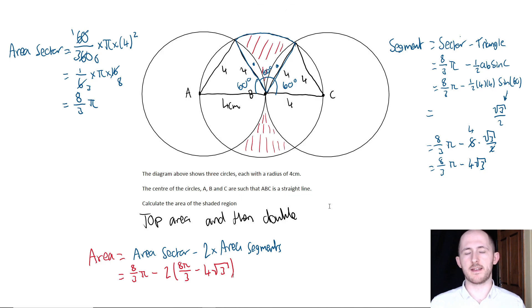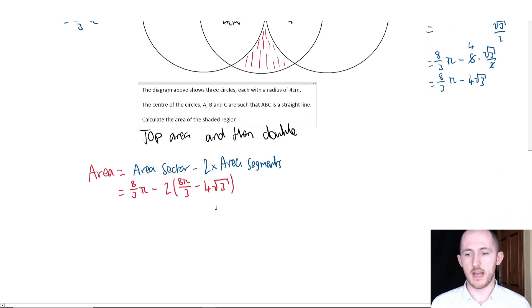So now we can bring this all together to get to the final step. That means our area is the area of the sector, 8 pi over 3, minus 2 times the area of the segments that we just worked out. From here all we need to do is expand and simplify and we will get to our answer.